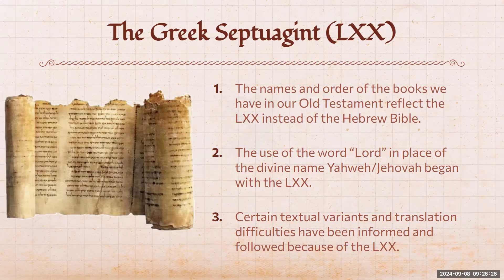For nearly two millennia, the Septuagint has influenced our Bible both in structure and interpretation. How we refer to God's divine name as 'the Lord' comes from the Septuagint. It helps us with textual variants and translation difficulties. I praise God for his preservation of the Septuagint. I don't hold it as more authoritative than the Hebrew, but I do think it's very impactful on how we understand our Hebrew. The Septuagint is a necessary part of understanding the Old Testament.